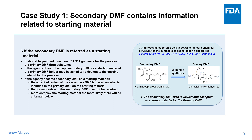If the secondary DMF contains information related to the starting material, it should first be justified based on ICH Q11 guidance for the process of the primary DMF drug substance synthesis. If the agency does not accept the secondary DMF as a starting material for the primary DMF holder, the DMF holder may be asked to redesignate the starting material for the process. If the agency accepts the secondary DMF as a starting material, the extent of review is based on what is included in the primary DMF on the starting material. In many cases, a formal review of the secondary DMF may not be required, and the more complex the starting material, the more likely there will be a formal review.